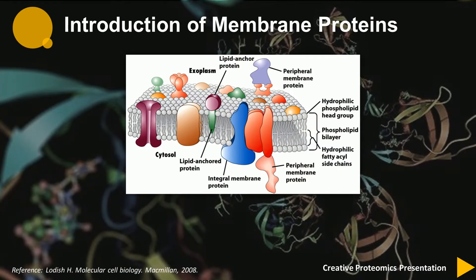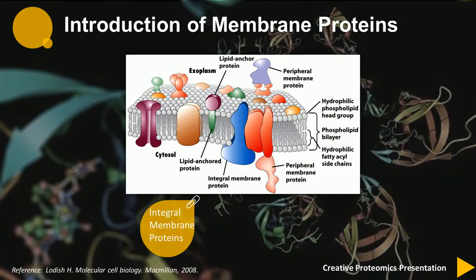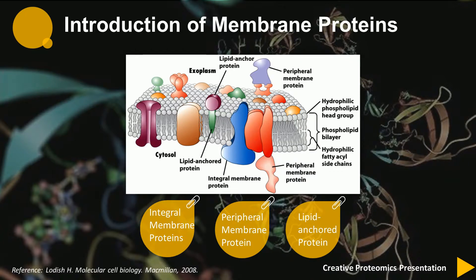Membrane proteins are a class of proteins that interact with or are part of biological membranes. They can be classified into three parts based on their location and interactions with membranes: integral membrane proteins, peripheral membrane proteins attached via non-covalent bonds, and lipid-anchored membrane proteins attached through covalent bonds.